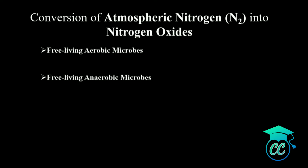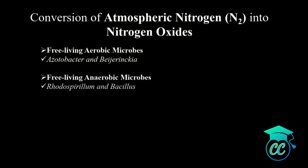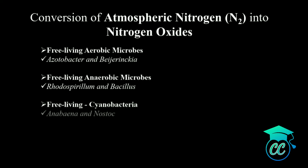The examples for free-living aerobic microbes are Acetobacter and Azotobacter, and the free-living anaerobic microbe is Rhodospirillum and Bacillus. There are also free-living cyanobacteria, and the examples are Anabaena and Nostoc.